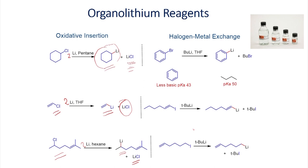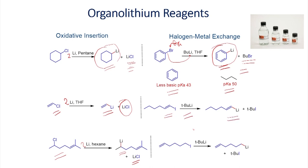The other method is to prepare organolithium reagents via halogen-metal exchange. The first example involves the reaction of bromobenzene with butyllithium to give phenyl lithium, generating bromobutane as a byproduct. This is because the product is less acidic in nature. Similarly, if you have vinyl iodide you can react it with tert-butyllithium to convert into vinyl lithium. A third example involves an alkyl halide with a double bond, which can also be reacted with tert-butyllithium to give the alkyl lithium reagent.